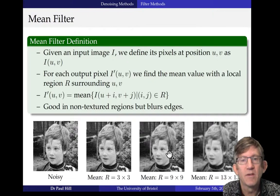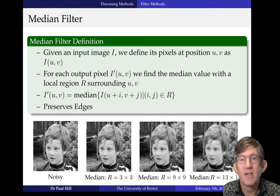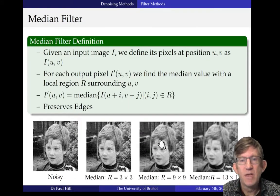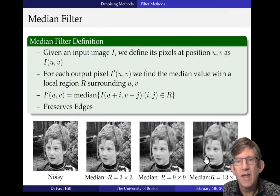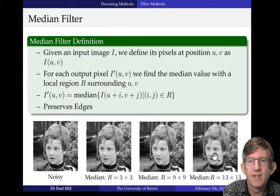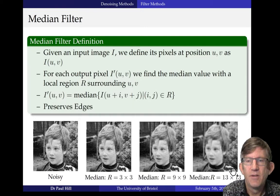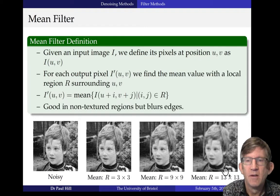One way of doing a better job is the median filter. The median filter does the same sort of thing — it works on a region. You can see that here, although it's a little bit blurred, if you look at his shoulder and compare the two, the mean filter is actually blurring this region quite badly.